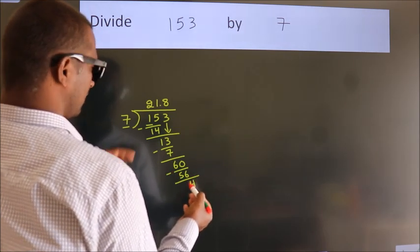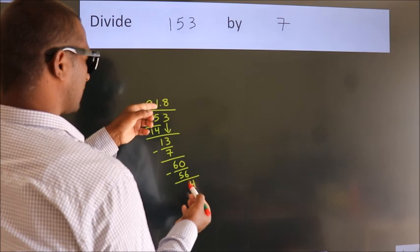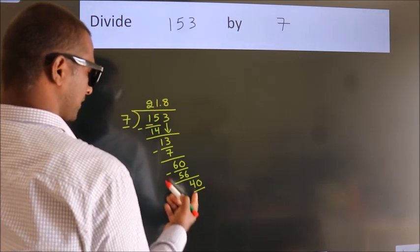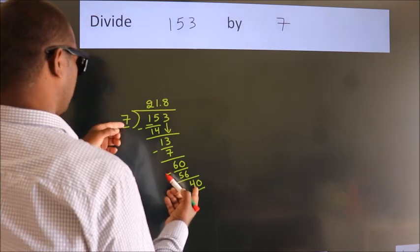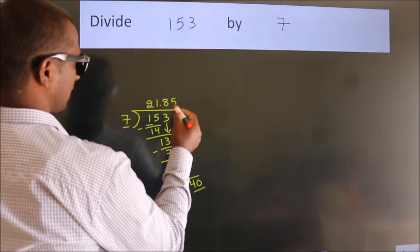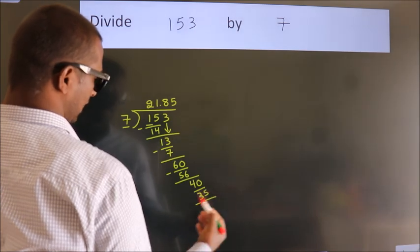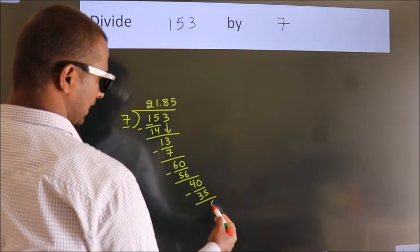After this, we already have the decimal. So directly take 0. So 40. A number close to 40 in the 7 table is 7 fives, 35. Now we subtract. We get 5.